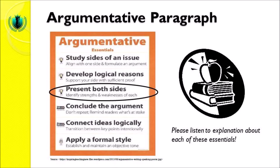The third essential is that you present both sides. It means that you identify the strengths and weaknesses of each side. After choosing one side and forming an argument, our task is also to explain both sides — side A and side B — and identify what the strengths and weaknesses are of each. For example, if we choose fried noodles over boiled noodles, we must be able to explain the advantages and disadvantages of both. We have to be able to present strengths and weaknesses of each side, otherwise we will be considered biased.